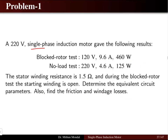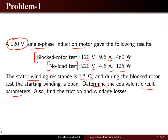Problem one: a single phase induction motor rated at 220 volt. Two tests are conducted — block rotor and no-load test — and their voltmeter, ammeter and wattmeter readings are given. These readings will be used to estimate the equivalent circuit parameters. The stator winding resistance R1 is given as 1.5 ohms, and we also have to find the friction and windage losses apart from the other equivalent circuit parameters.